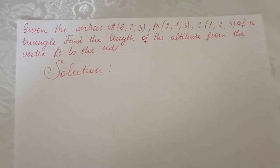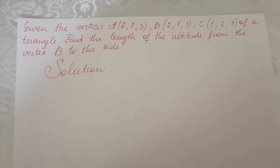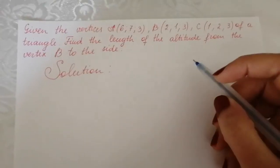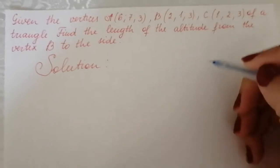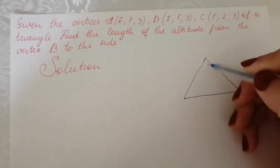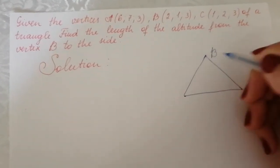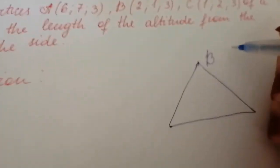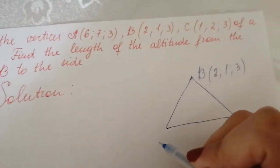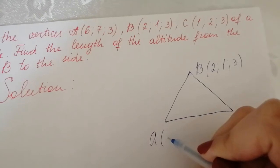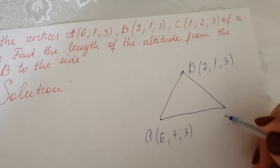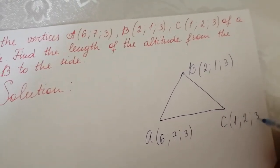Given the vertices A, B, and C of a triangle, find the length of the altitude from the vertex B to the side AC. For example, this is our triangle A, B, C. Vertex B has coordinates (2, 1, 3), point A has coordinates (6, 7, 3), and vertex C has coordinates (1, 2, 3).